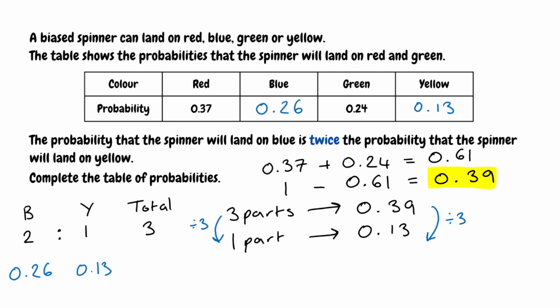Looking at the table of probabilities, all of those probabilities add up to 1. And we can see that the probability that the spinner will land on blue is twice the probability that the spinner will land on yellow.